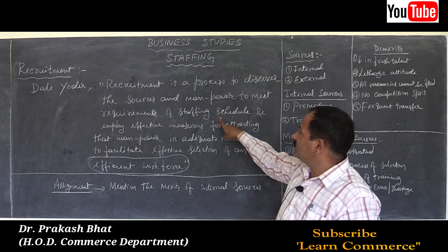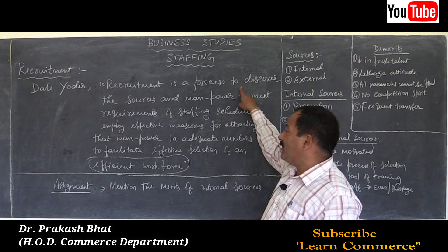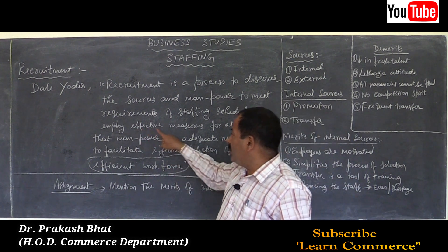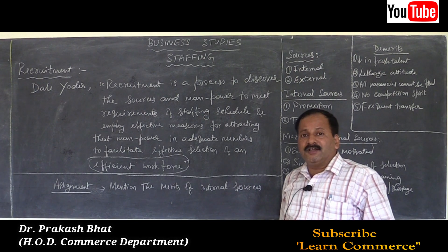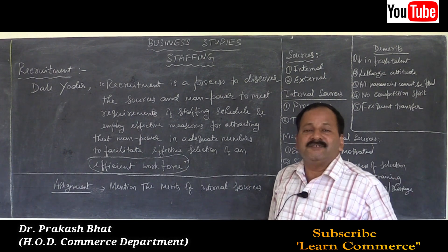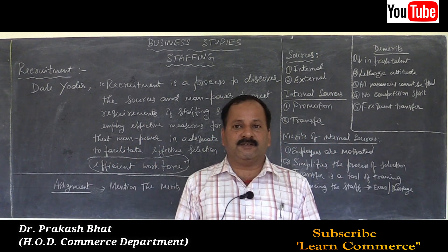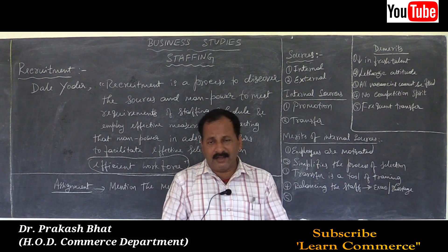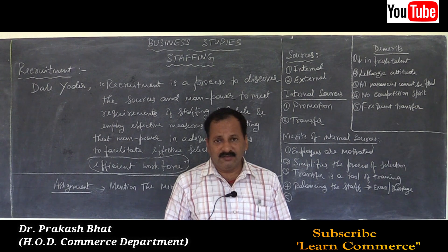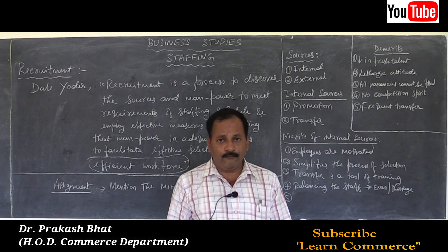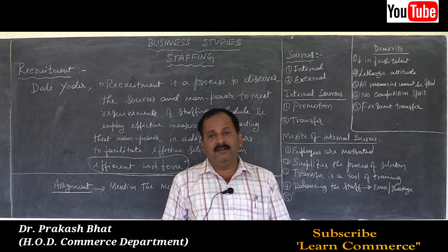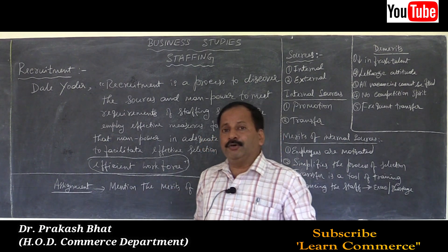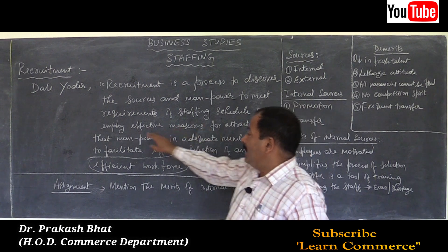We have searched for the sources, identified what type and how many people are required — that is the staffing schedule. 'Employ effective measures' means we are not simply calling someone to join; there are procedures. Nowadays mostly online applications are submitted, along with documents, photographs, fees, and challan numbers — those steps form the procedure that must be followed.